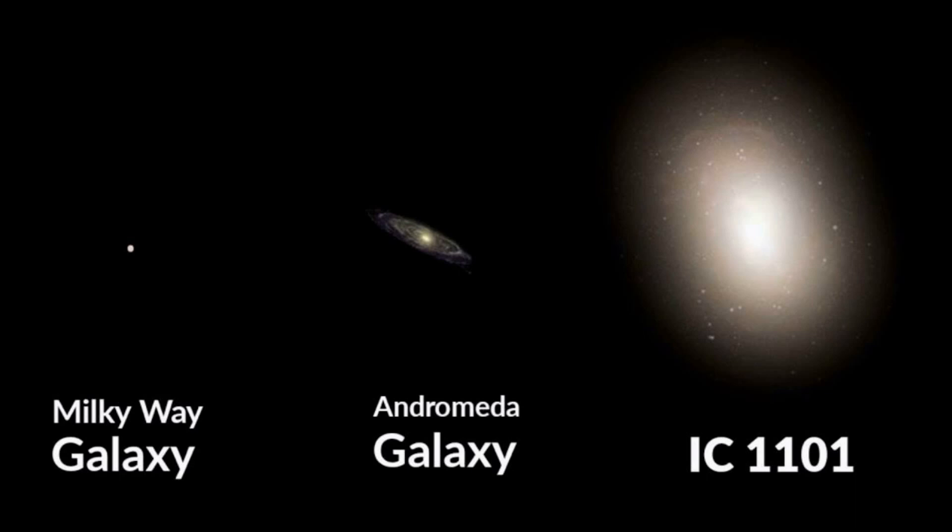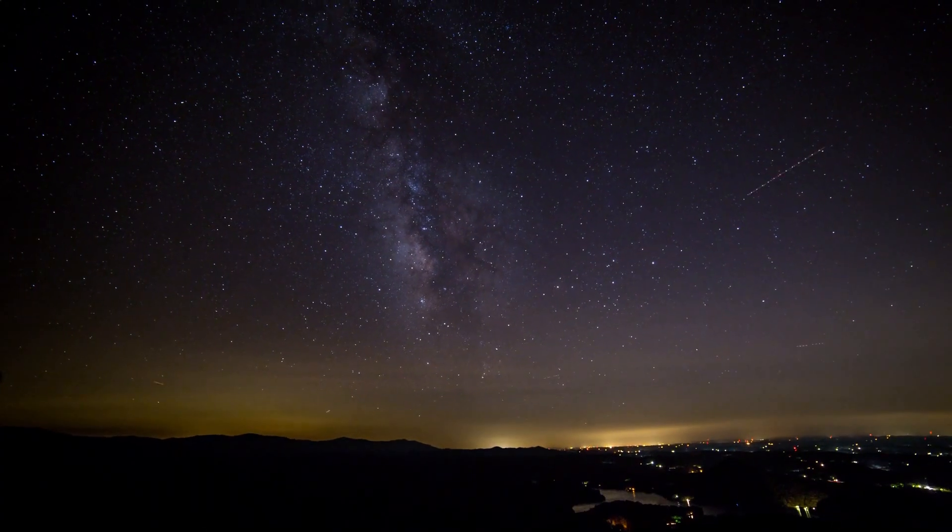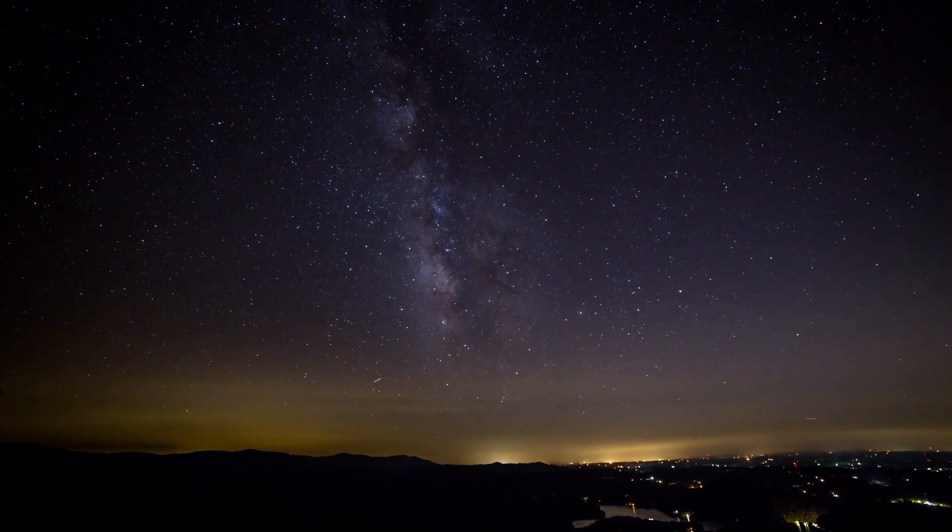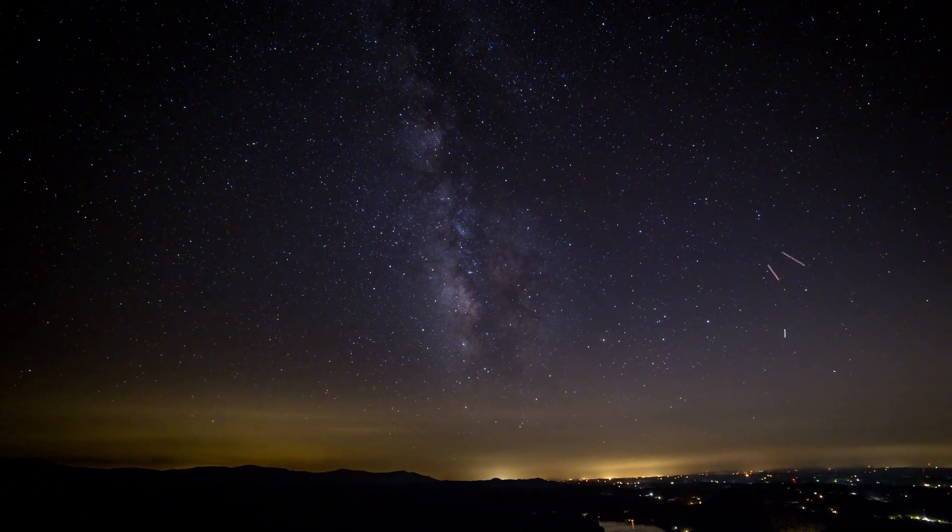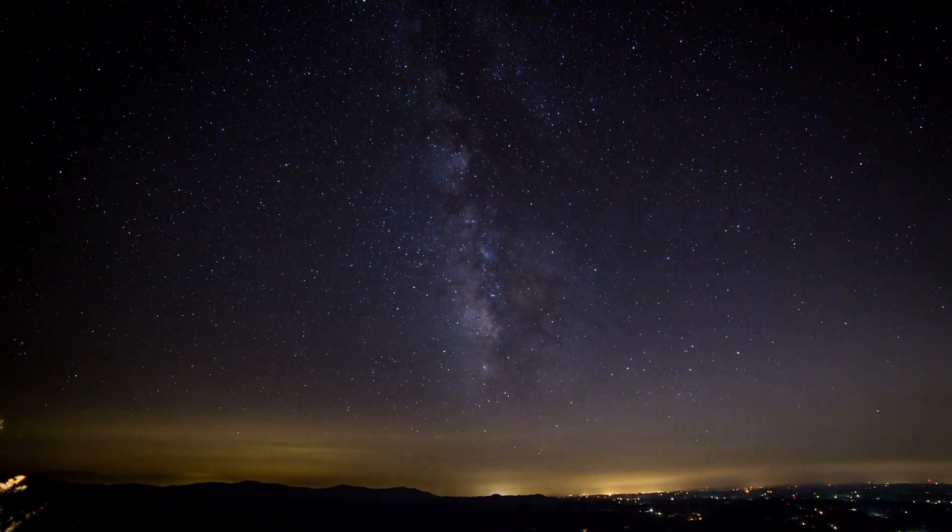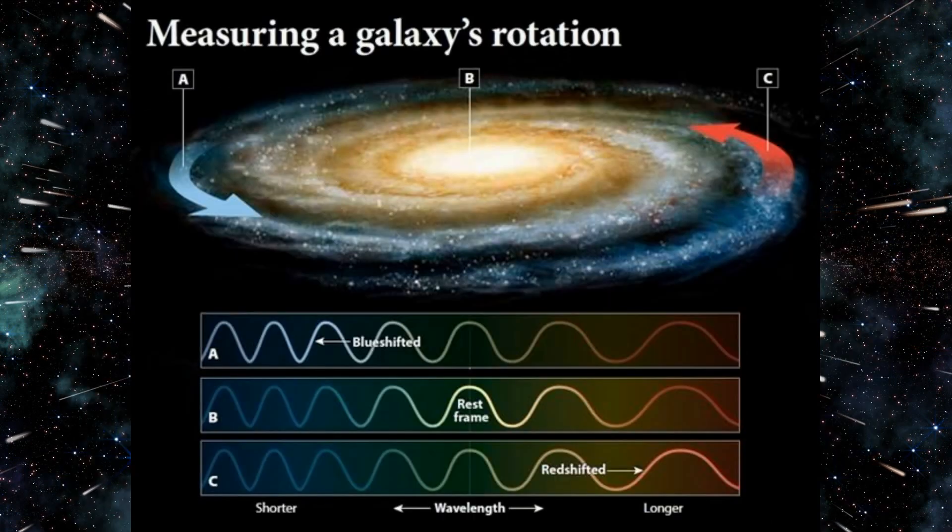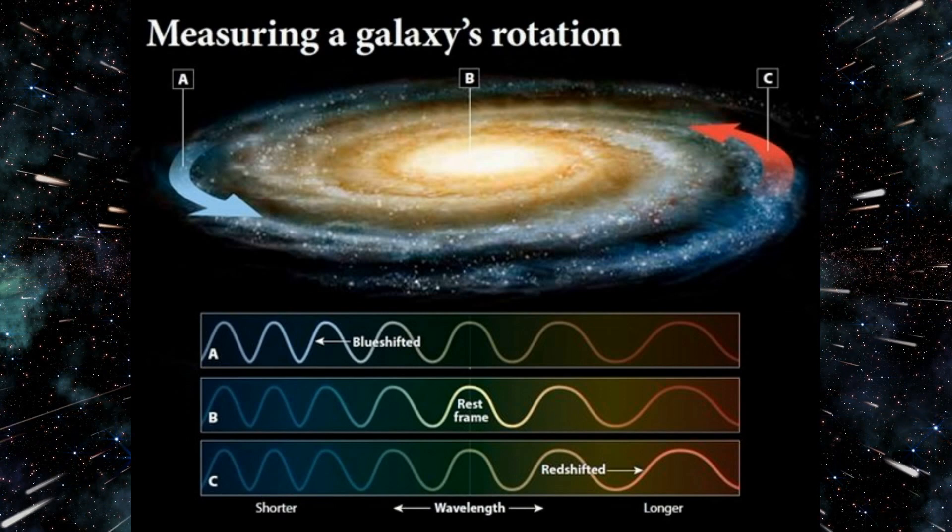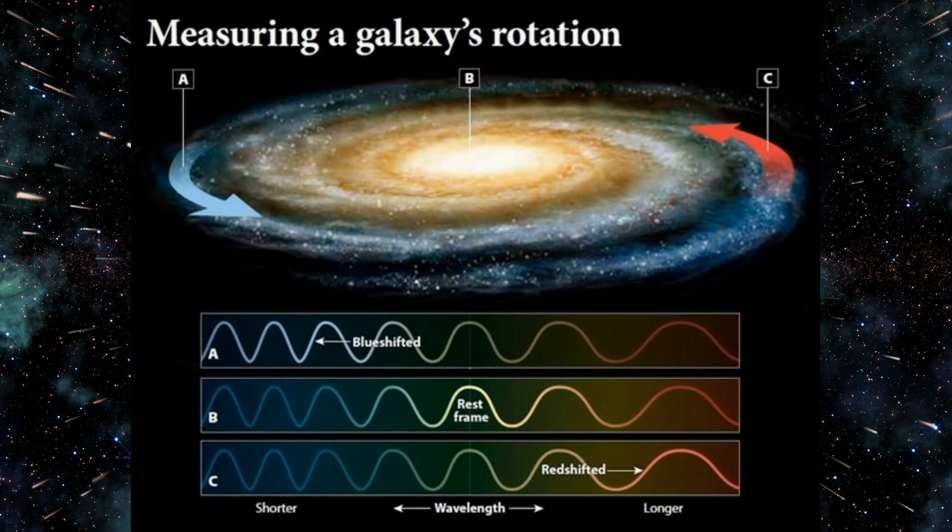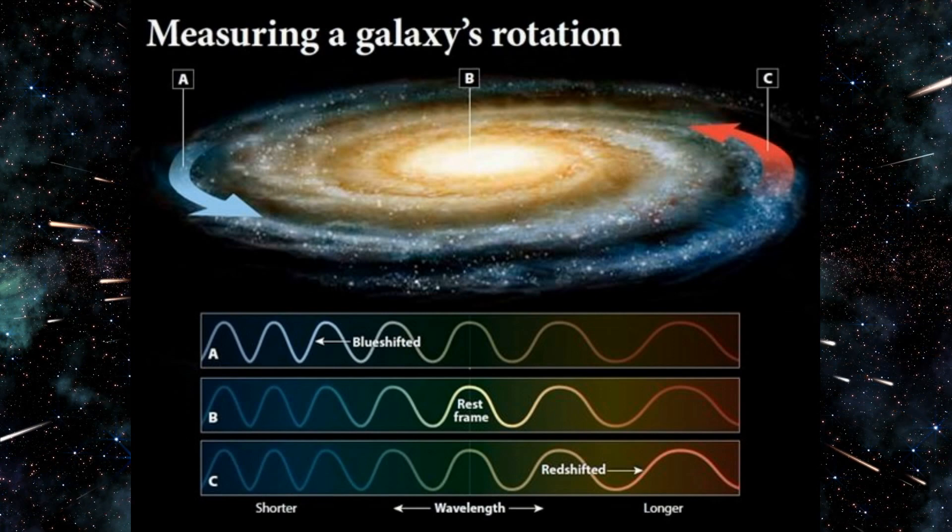Astronomers use various techniques to estimate the size of galaxies. First, stellar population: the number of stars within a galaxy is a key indicator of its size. Astronomers can estimate the total stellar mass by studying the galaxy's overall brightness and the distribution of different stellar types. Second, rotation curves. Galaxies rotate, and the speed of their rotation is influenced by the total mass they contain. By measuring the rotational speeds of stars and gas at different distances from the galactic center, scientists can infer the galaxy's total mass distribution and estimate its size.